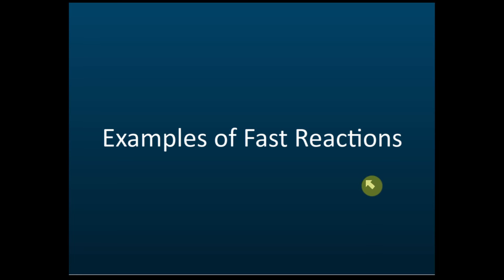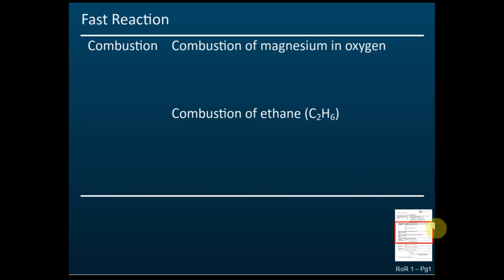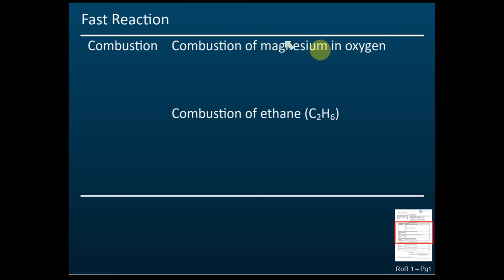Let's start with some examples of fast reactions from your notes. We are discussing examples of fast reactions. Combustion is a fast reaction — for example, combustion of magnesium and oxygen, or combustion of ethane.